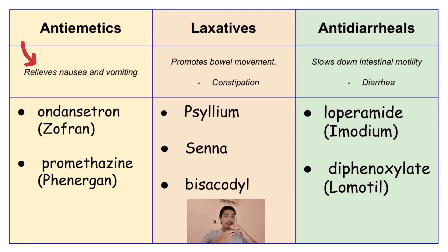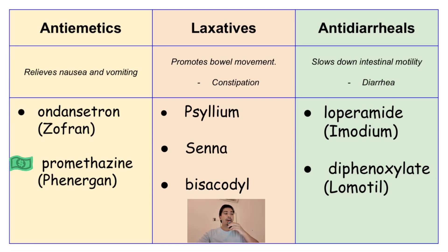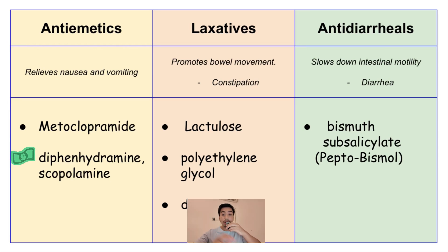For anti-emetics, as we all know, they relieve nausea and vomiting. Examples of anti-emetic drugs are ondansetron, promethazine, metoclopramide, diphenhydramine, and scopolamine.